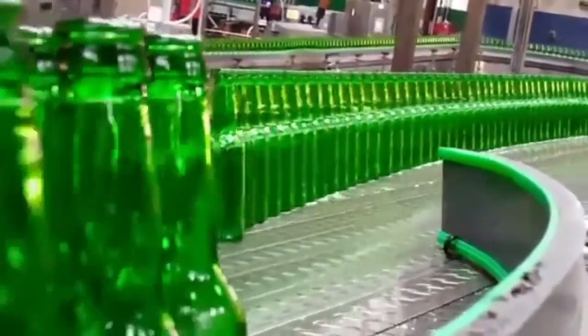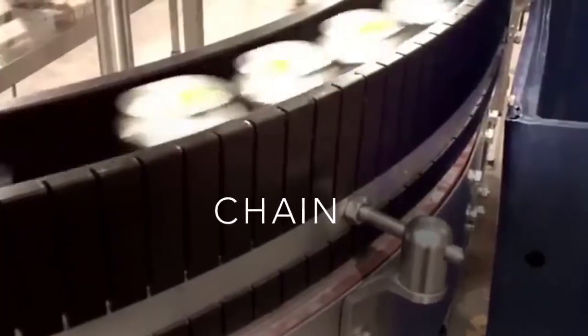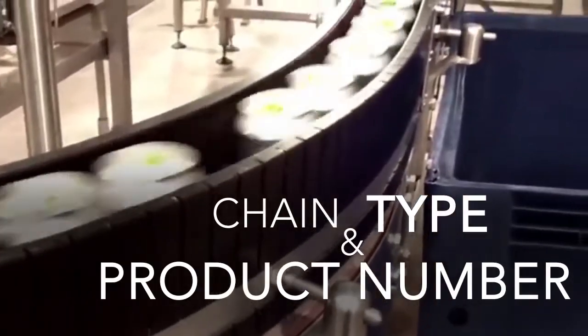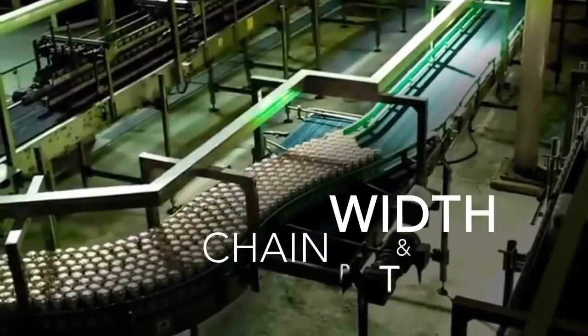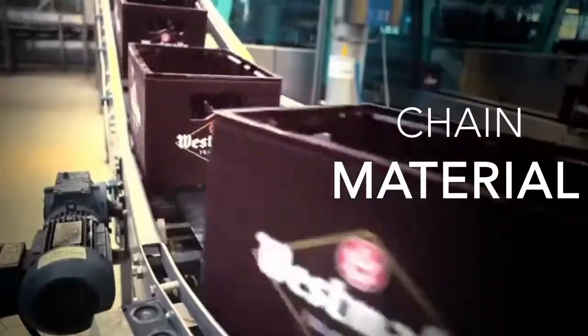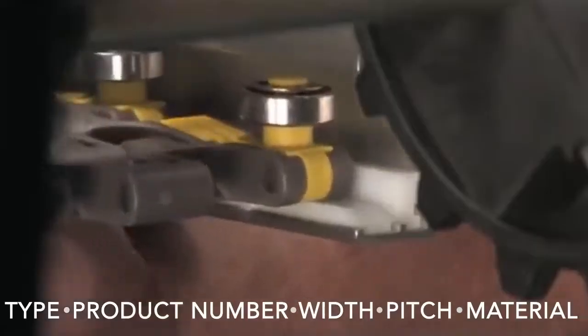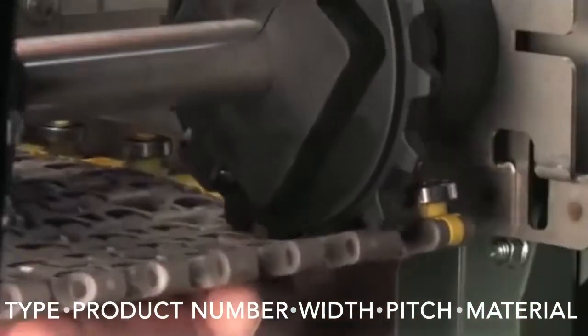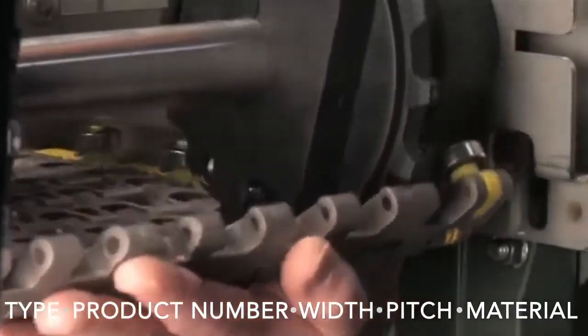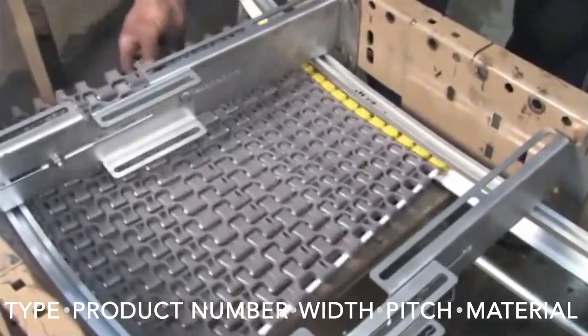Doing so will provide useful information, such as the chain type and product number, the chain width and pitch, and the chain material. These pieces of information are critical when troubleshooting is necessary and will expedite the reorder process.